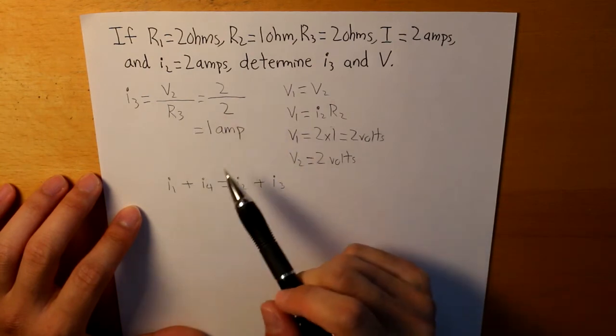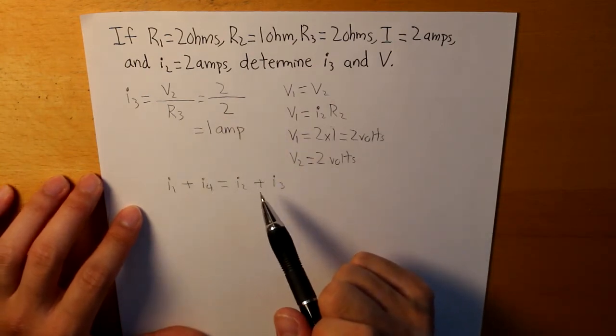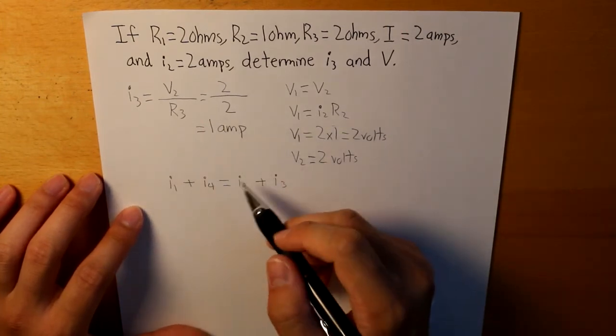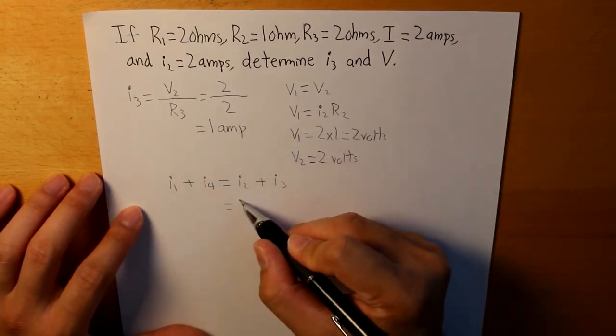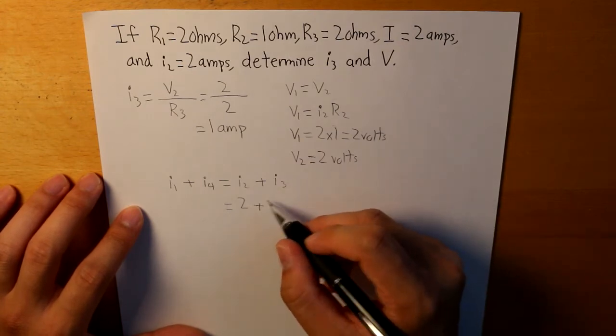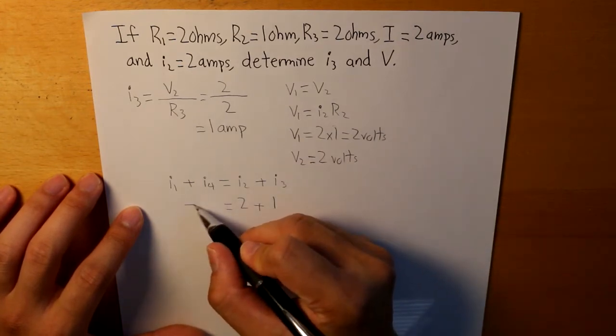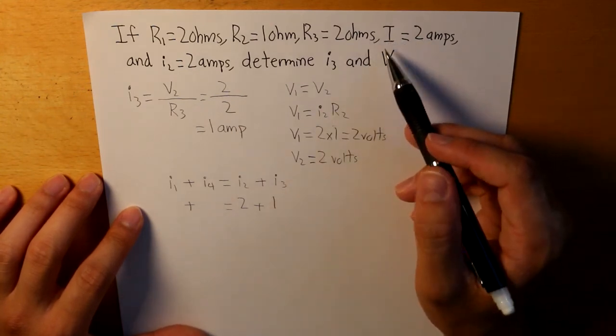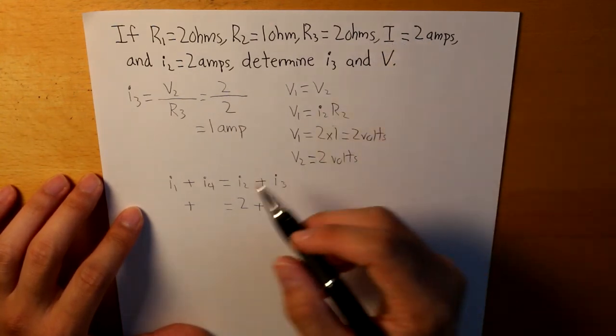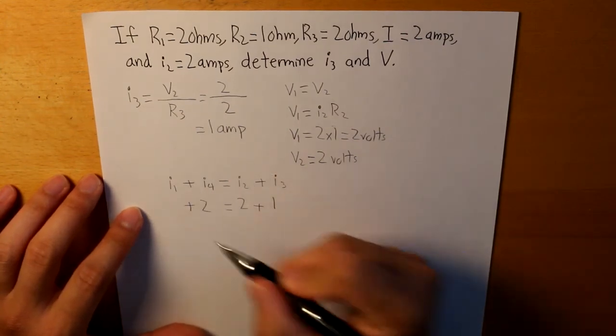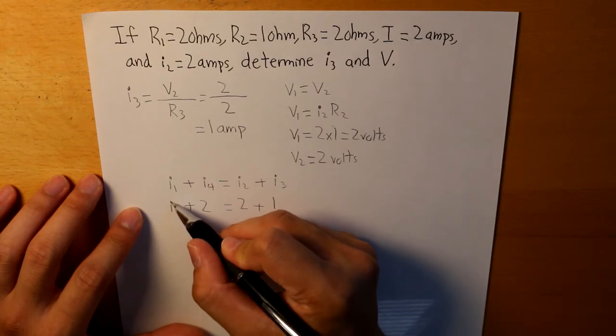Now, let's see which currents have already been determined. So we know that I2 is 2 amps. I3 is 1. And I4 is 2 amps because I4 is directly correlated to what the value of the current source is, which is I. So I4 is 2, and then I1 is unknown.